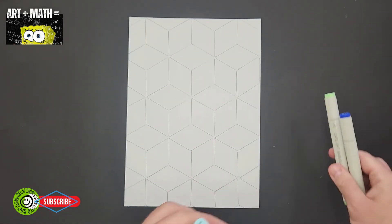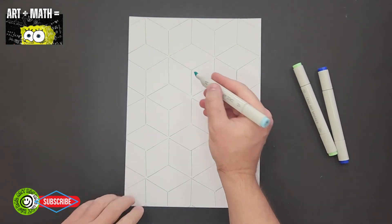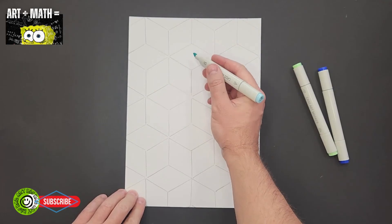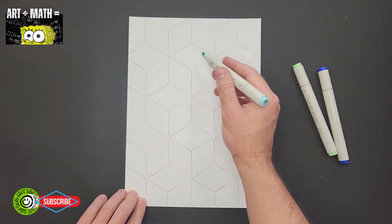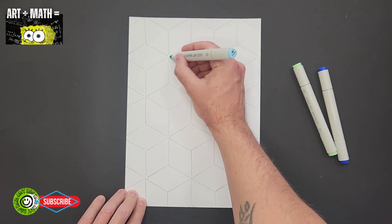So I'm going to start with the lightest color first. And that's for the top of the cube. Okay, I'll start in the middle. And we're just coloring one rhombus at a time.